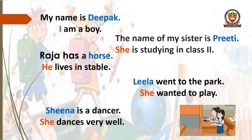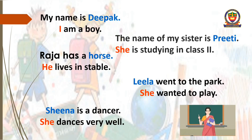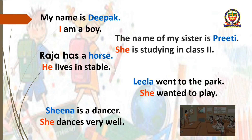Last sentence: Sheena is a dancer. She dances very well. So Sheena is a noun and she is a pronoun, as we are using she in the place of Sheena. I think pronouns must be clear by now.